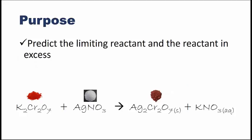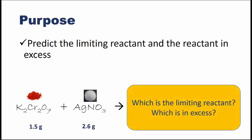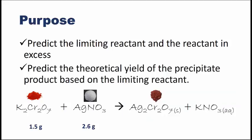The purpose of this lab is for you to predict the limiting reactant and the reactant in excess. You will be given the masses of each of the reactants, and you will need to determine before starting the lab which reactant is the limiting reactant and which is in excess. Once you've determined the limiting reactant, you'll be able to determine the theoretical yield of the products. In this lab, we're only interested in the solid product, silver dichromate, and you'll be able to find out how much silver dichromate the reaction should yield based on the amount of limiting reactant used. Remember that theoretical yield means how much you should get in theory.